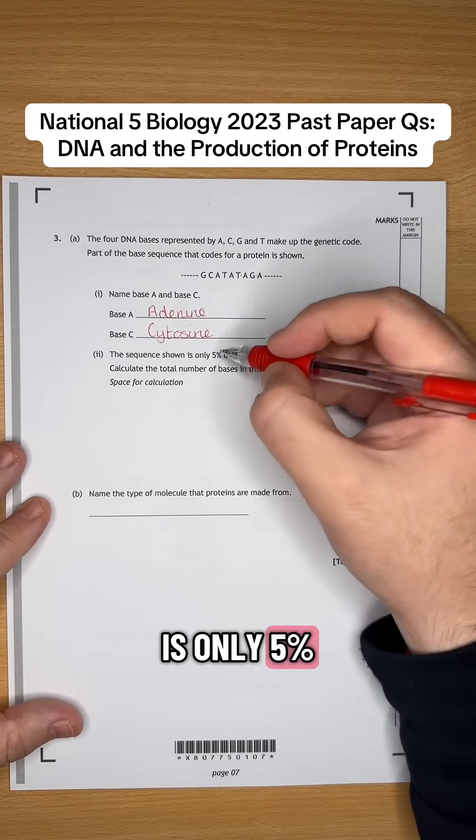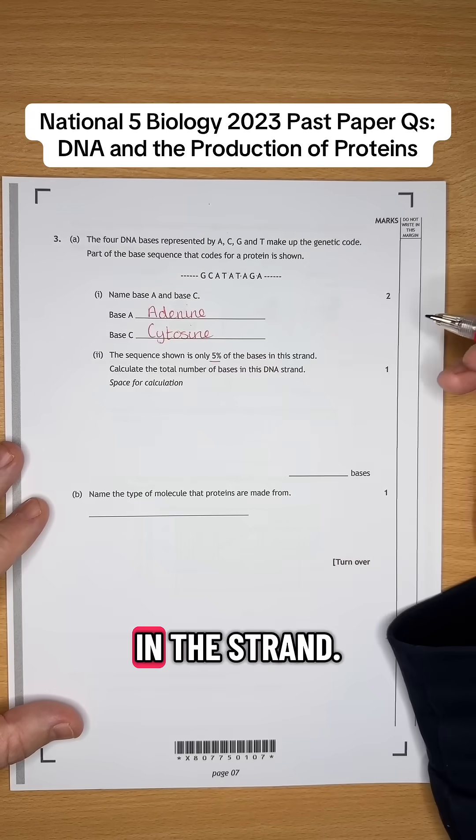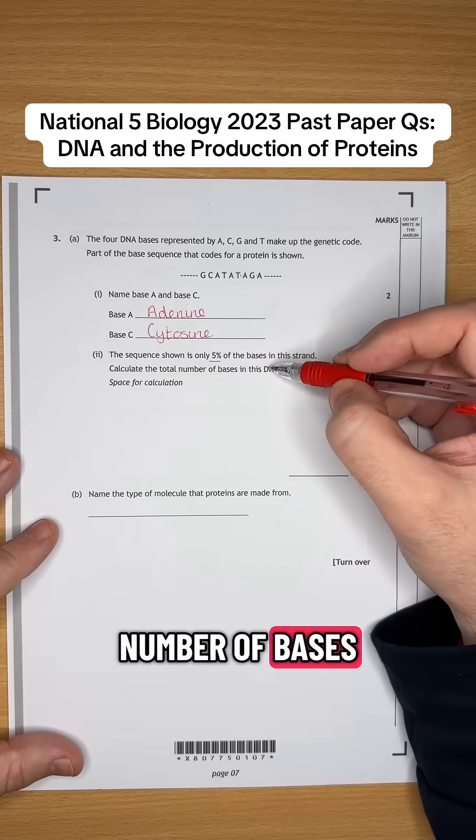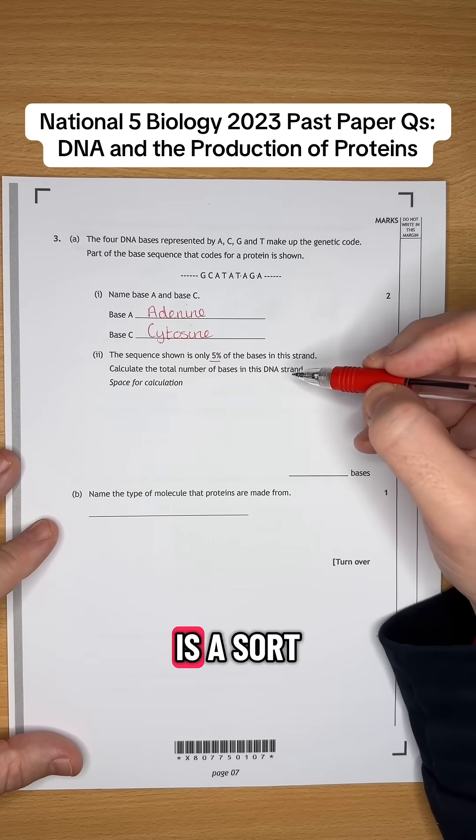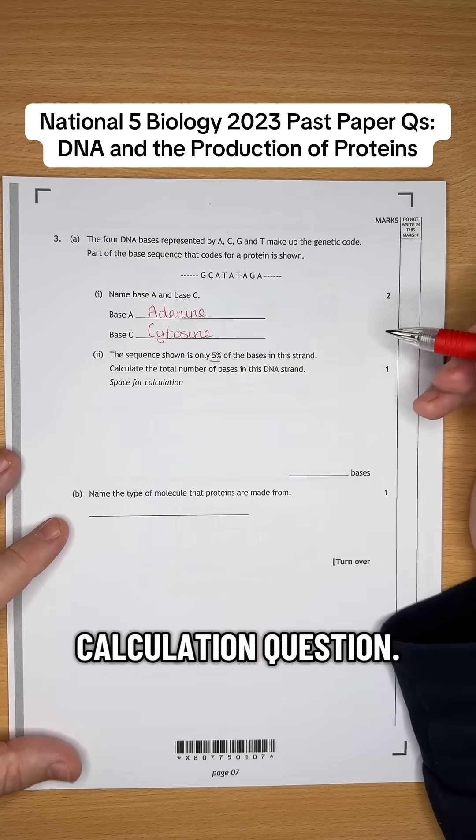The sequence shown is only 5% of the bases in this strand. Calculate the total number of bases in this strand. So this is a reverse percentage calculation question.